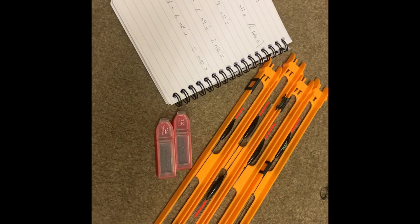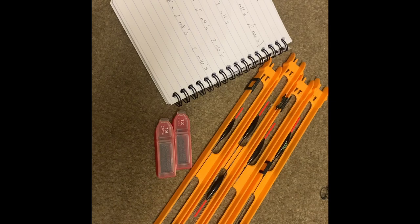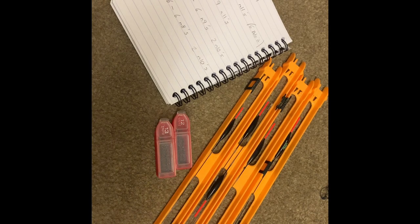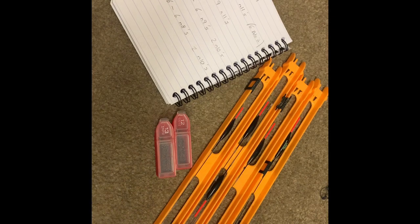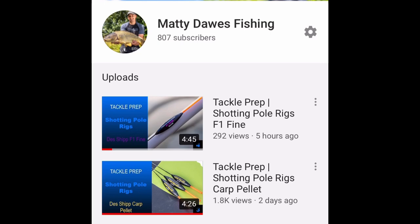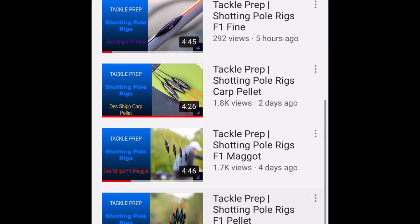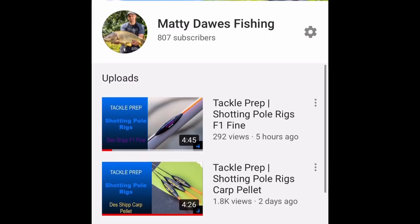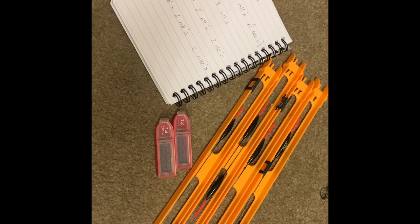Welcome everyone. Today we're going to talk about the Chianti float and how much shot it takes just to get it there or thereabouts ready on the bank. You may have seen I've done four videos below about the F1 pellet, F1 maggot, F1 fine, and carp pellet. If you haven't seen them, check them out below.